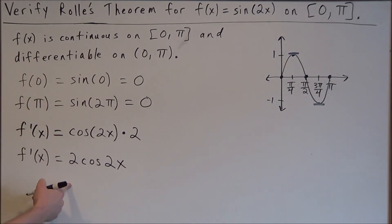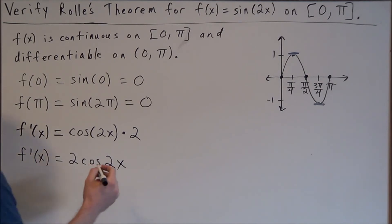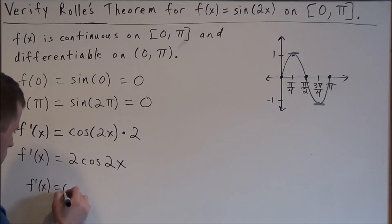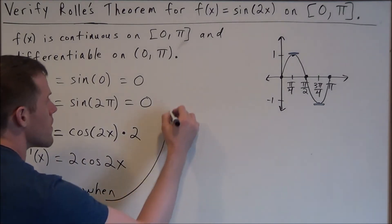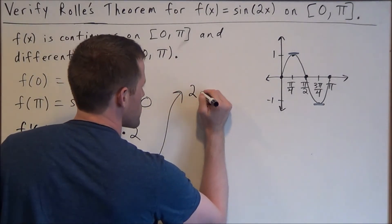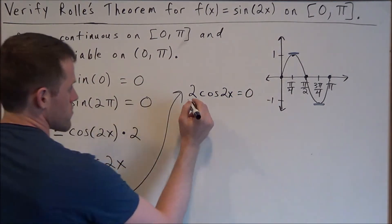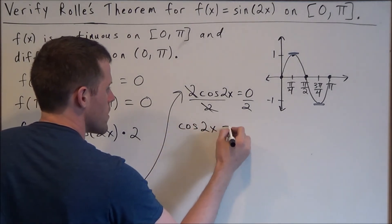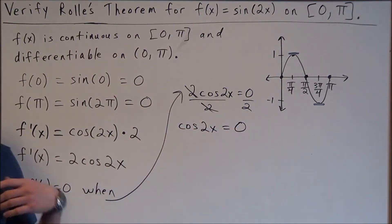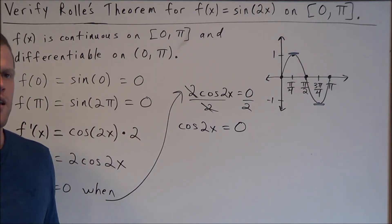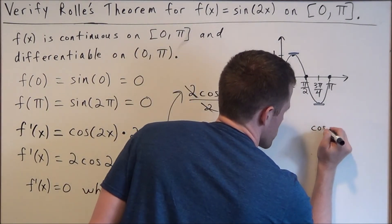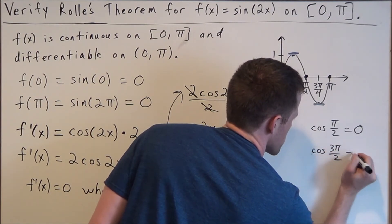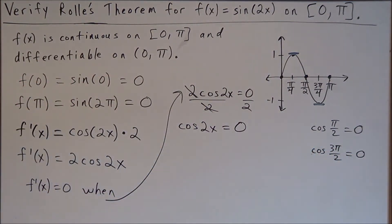The next step is to set the derivative equal to 0. We want to find when 2cos(2x) = 0. Dividing both sides by 2, we get cos(2x) = 0. To solve this, we consider the places where cosine equals 0: cosine of pi/2 equals 0, and cosine of 3pi/2 equals 0. This will help us solve for our x values.